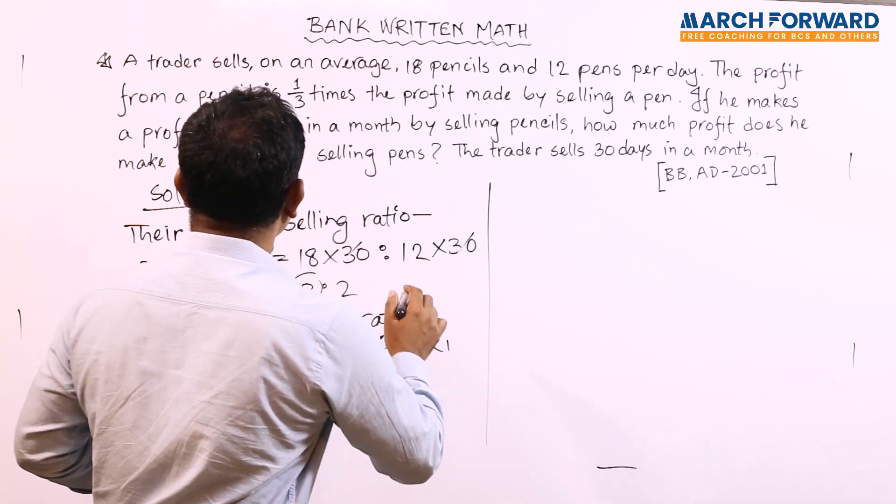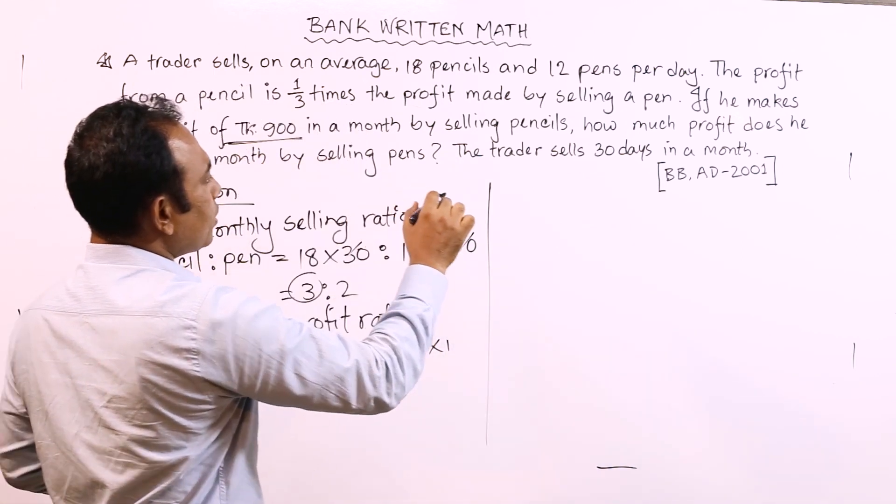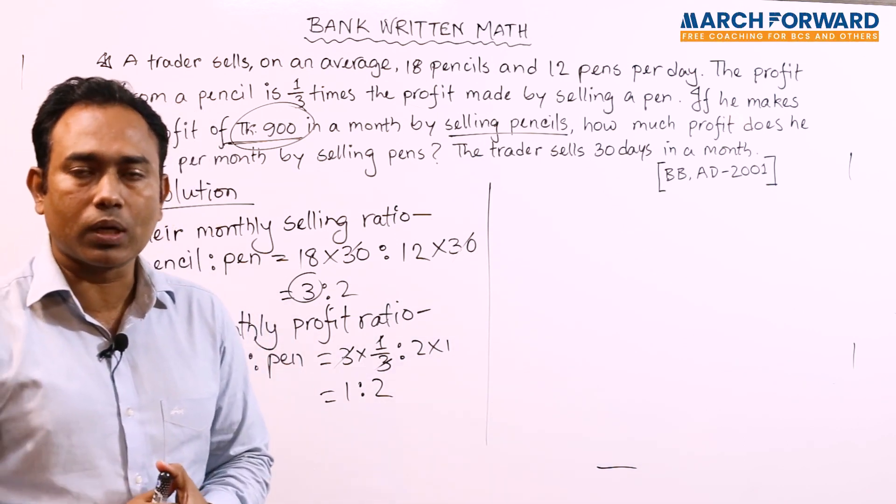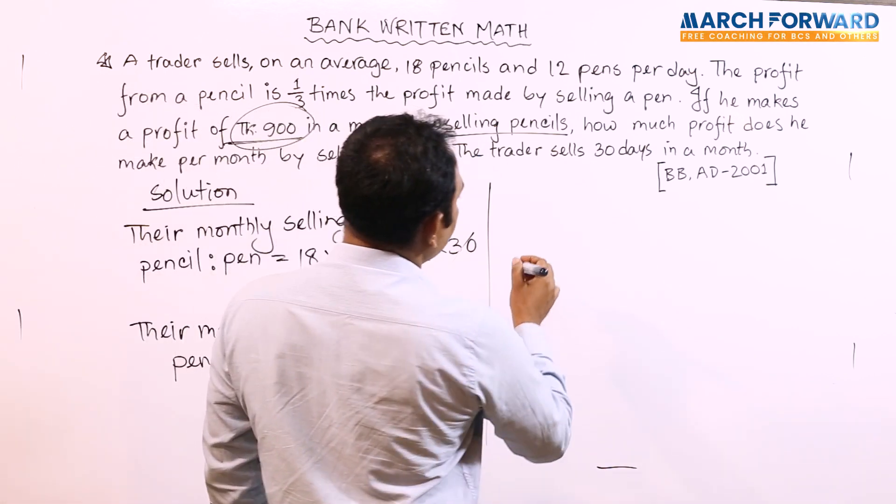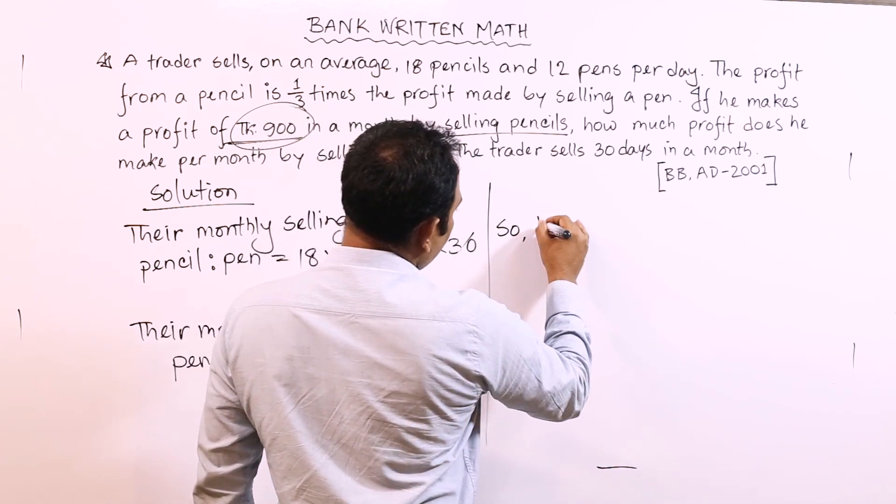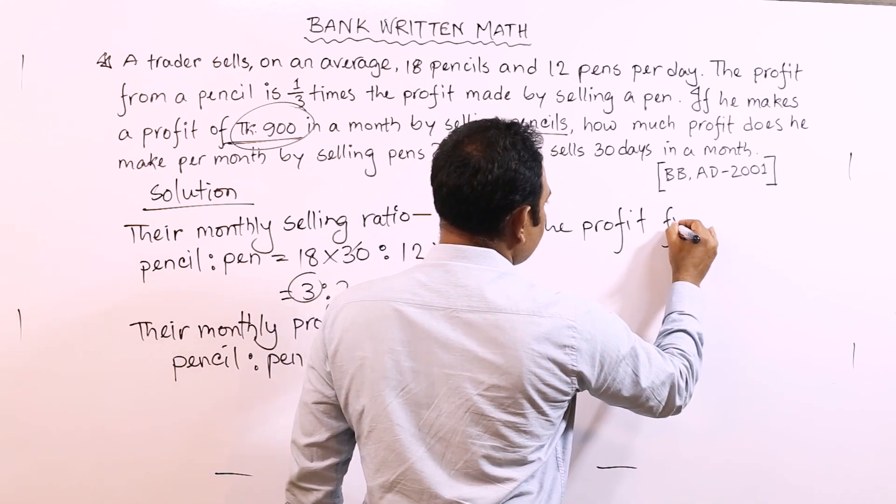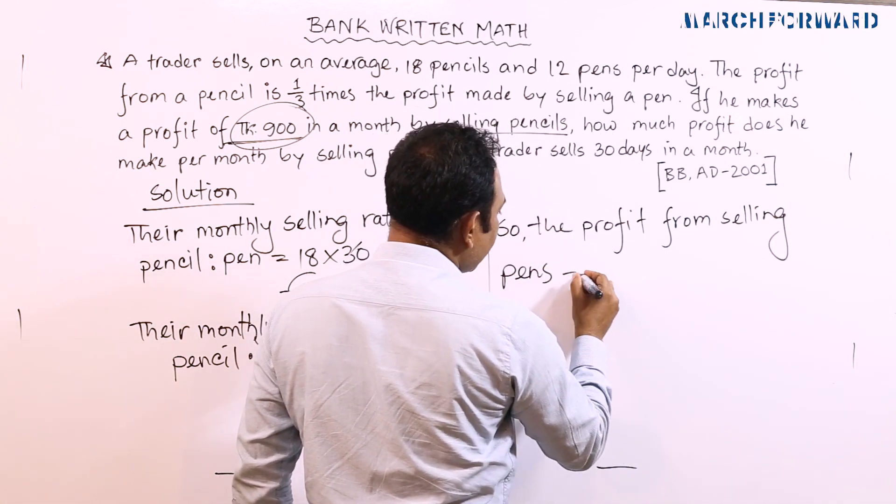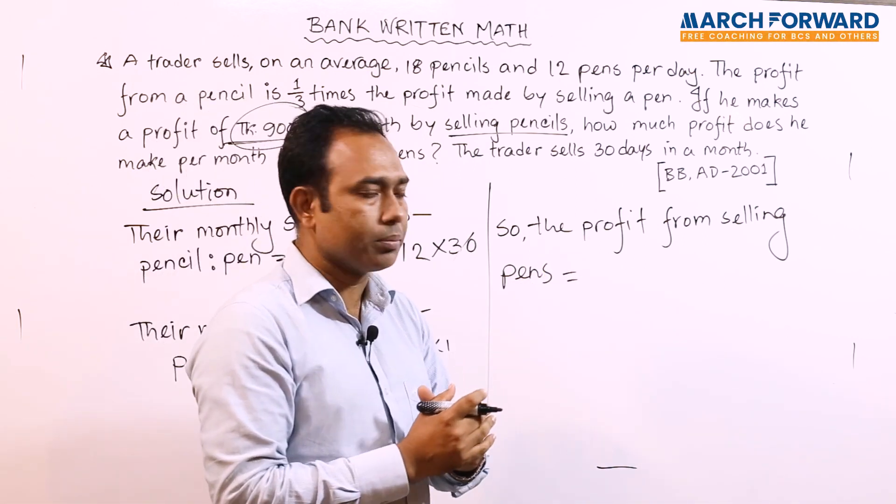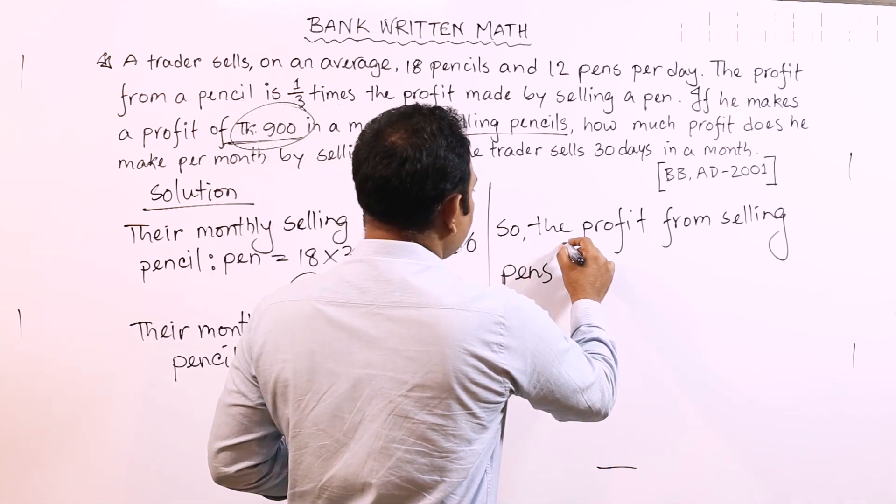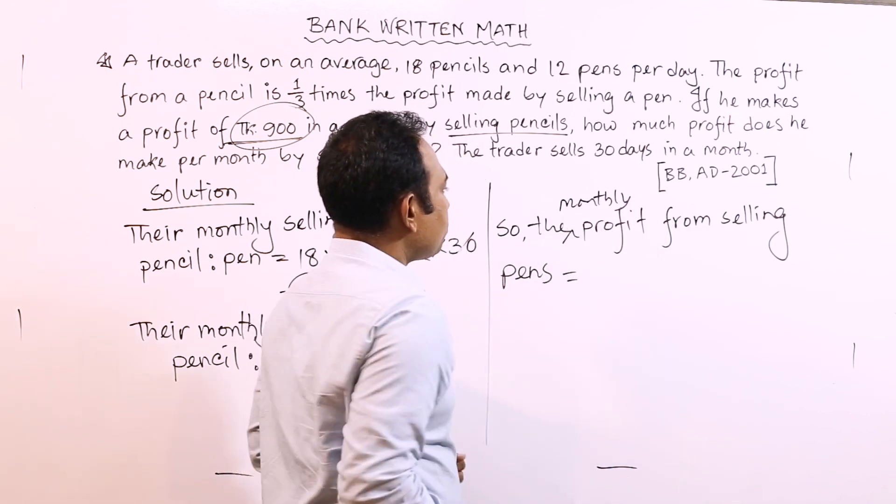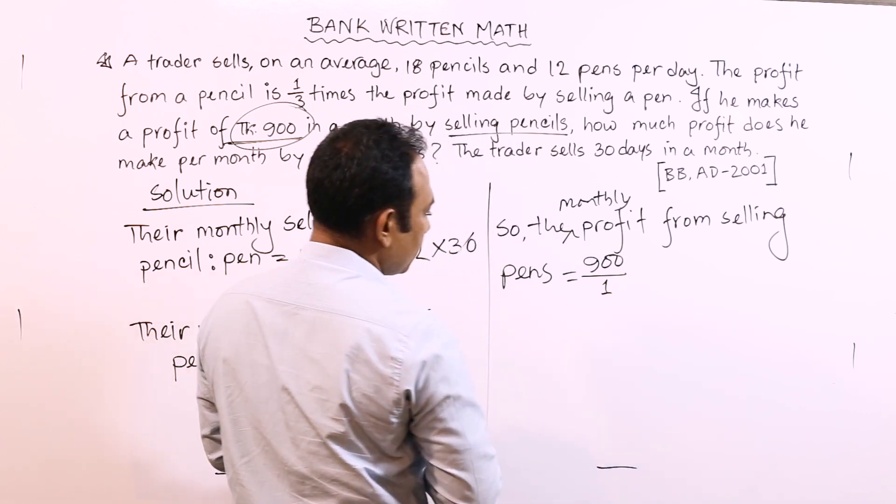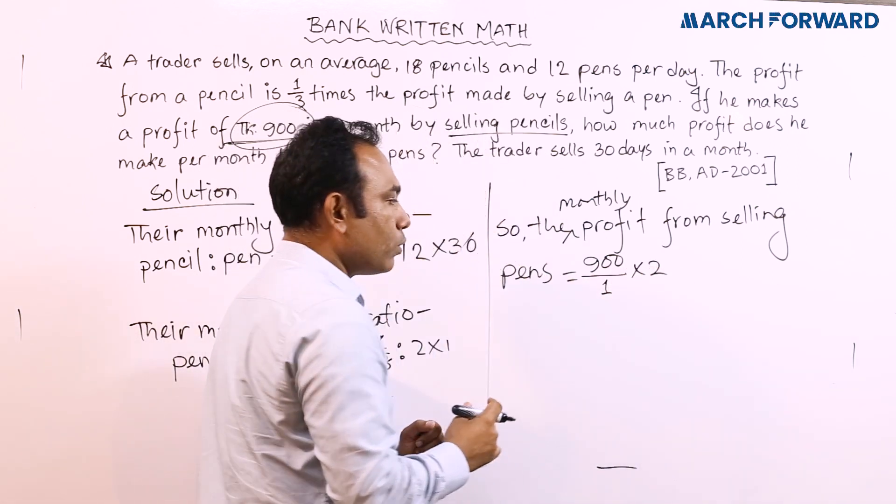Now relating the profit from selling pencils to profit from selling pens - the monthly profit from selling pens is 900 taka. Using the profit ratio of 1 to 3, we can calculate directly.